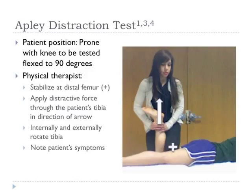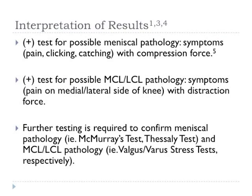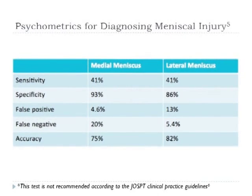The Apley distraction test also unloads the menisci and therefore may relieve symptoms if the menisci are involved. If the compression test elicits symptoms such as pain, clicking, or catching, it may indicate meniscal pathology. If the distraction test elicits symptoms on the medial or lateral side of the knee, it may indicate collateral ligament pathology. Further testing is needed to confirm these results.